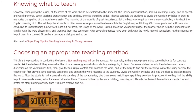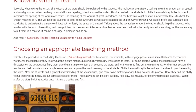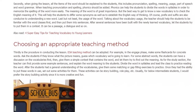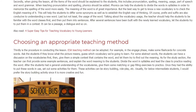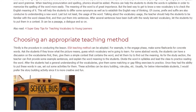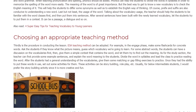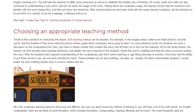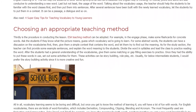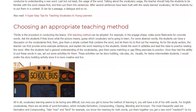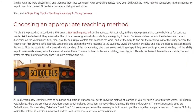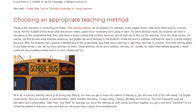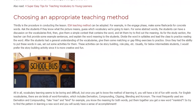As for the study section, the teacher can first provide some example sentences and explain the word meaning to the students. Divide the word into syllables and lead the class to practice reading the word. After the students have a general understanding of the vocabularies, give them some matching or gap-filling exercises to practice. Once they have the ability to put these words in use, set out some activities for them. These activities can be story building, role play, and so on.